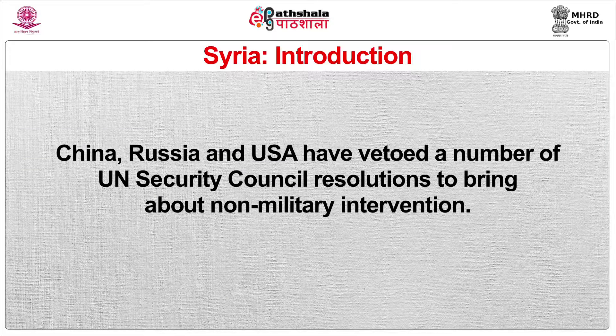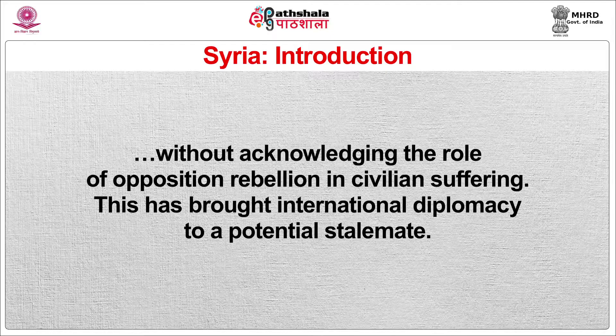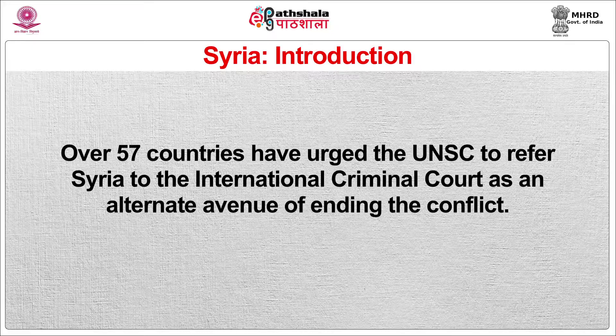The global community largely expressed support for the protesters' demand for rights. China, Russia and the United States could have vetoed Security Council resolutions, and in fact used veto power to bring about non-military intervention. While the US-led coalition believes the Assad government should step down, China and Russia believe UN Security Council resolutions are one-sided. This has brought international diplomacy to a potential stalemate. Over 57 states, including permanent Security Council members, have urged the UN Security Council to refer Syria to the International Criminal Court.